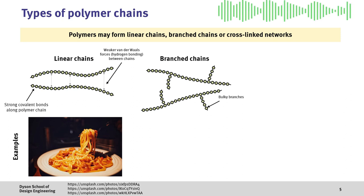Next, we have branched chains, where the chains have branches on them, meaning that they aren't fully linear.